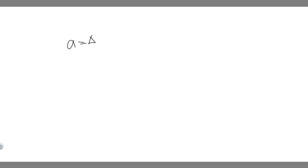In order to solve this problem, you need to know what angular acceleration is. We can denote this using alpha. Alpha is equal to the change in omega over the change in time. Omega here is called the angular velocity. So what we're trying to do is find the change in the angular velocity.